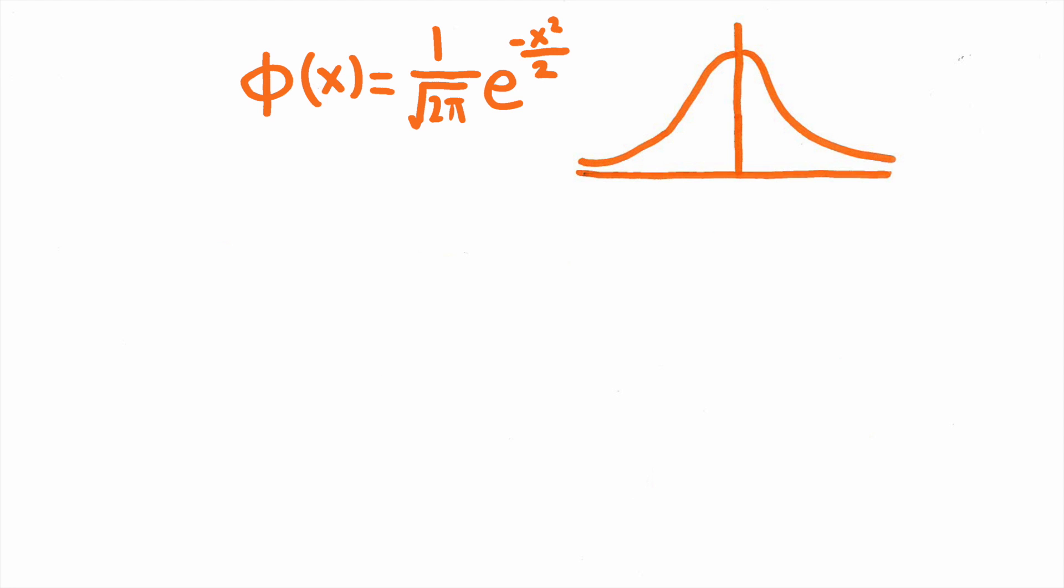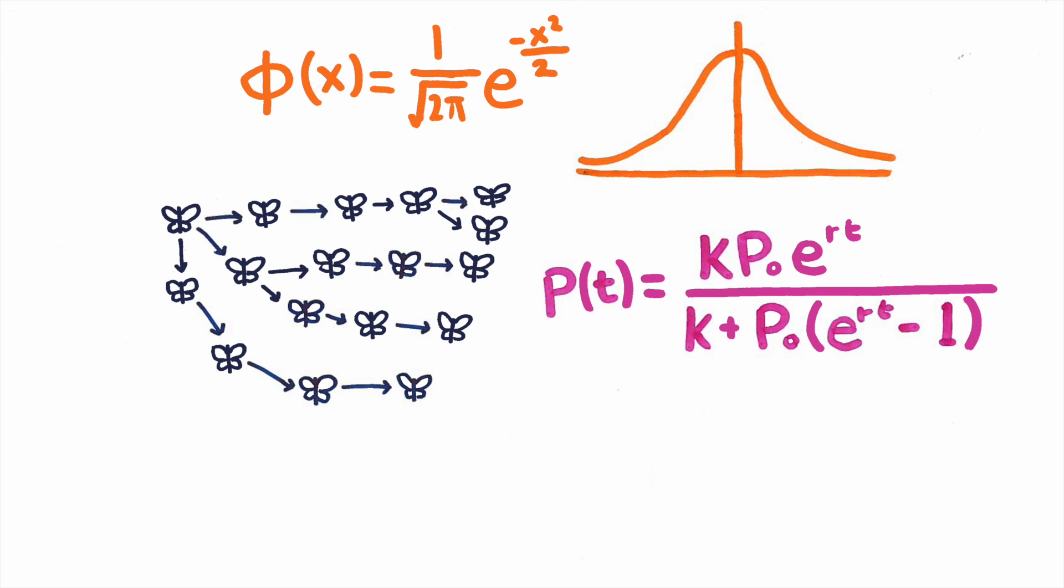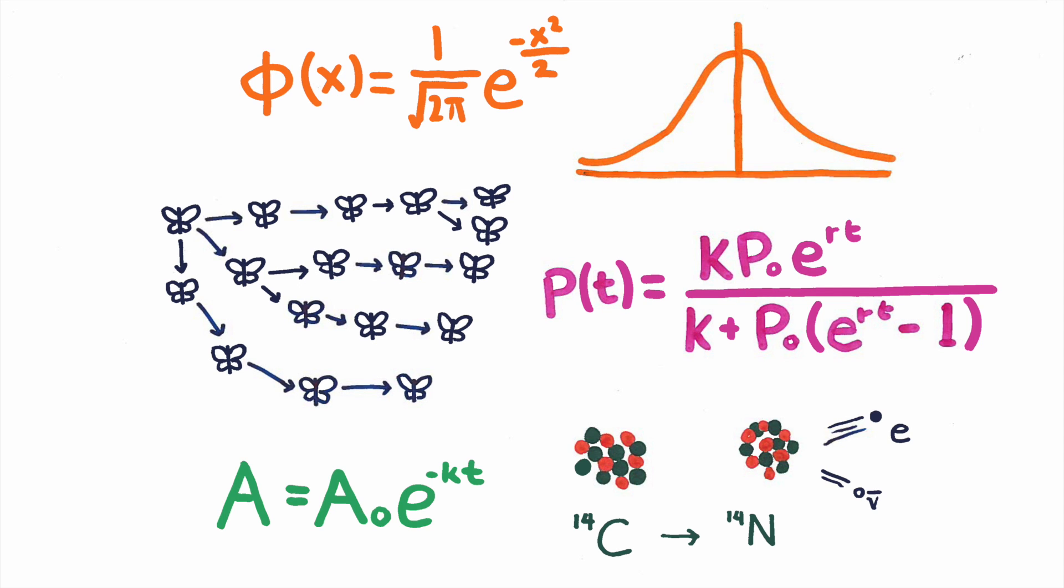In statistics, it describes the most important statistical distribution, the normal. In biology, it models populations of species through the logistic function. In physics, E describes the exponential decay of a radioactive material.